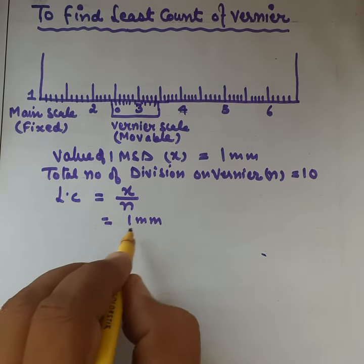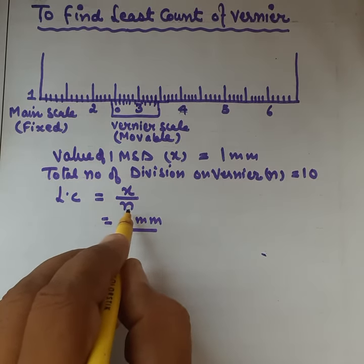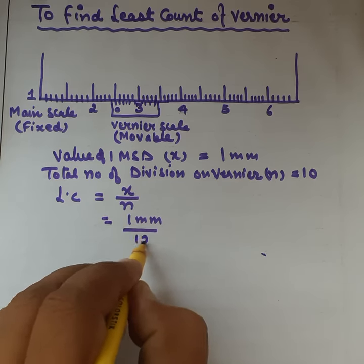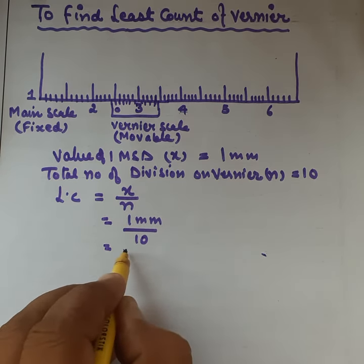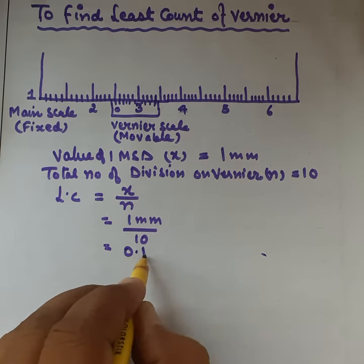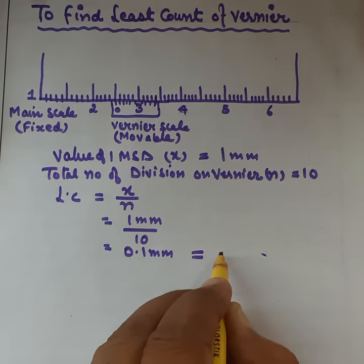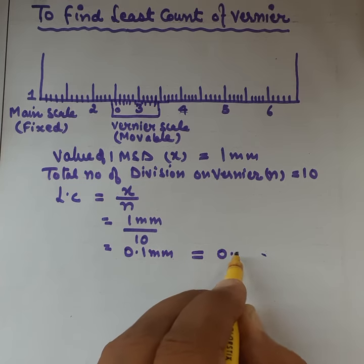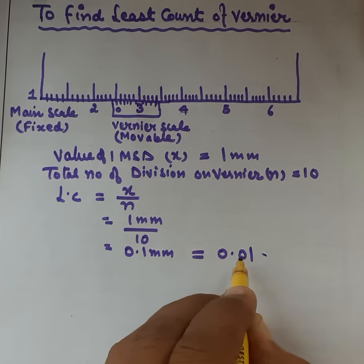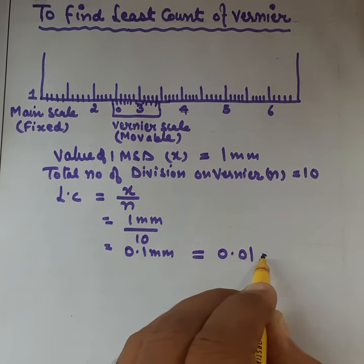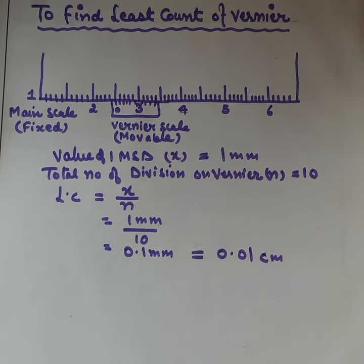And what is the value of n? That is 10. After solving we will get 0.1 mm. If you want to take it in centimeters, you can have 0.01 cm by dividing by 100.